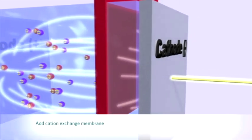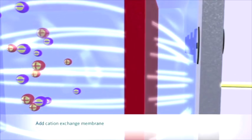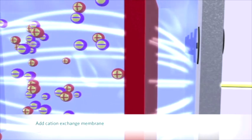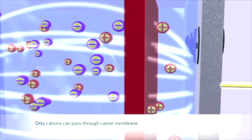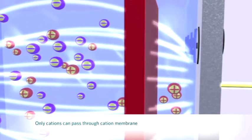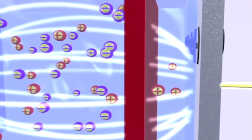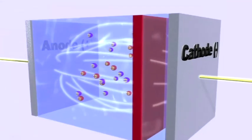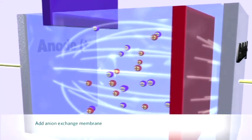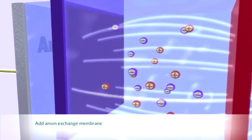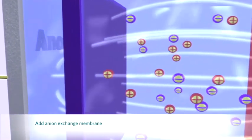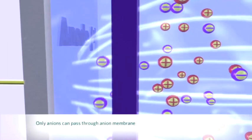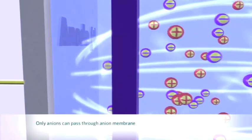When we insert an ion-exchange membrane made of cation-selective resins, it will block the flow of anions and water molecules. Only cations will be able to pass through to the other side. When we insert another ion-exchange membrane, this time made out of anion-selective resins, it will block the flow of cations and water molecules. Only anions will be able to pass through to the other side.